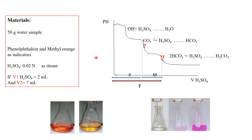Let's take a look at this curve and these reactions. At first, hydroxide ions react with sulfuric acid and produce water. After that, carbonate enters the reaction. This point is the p-point.